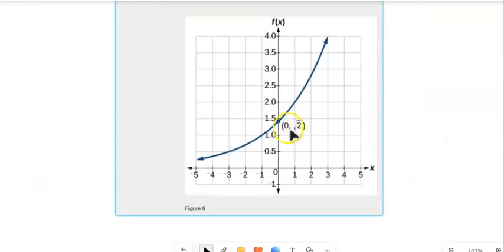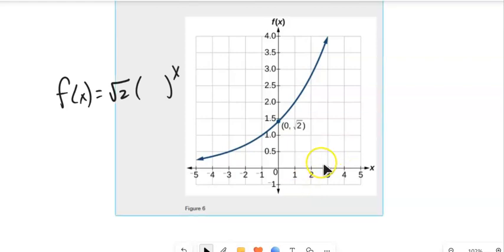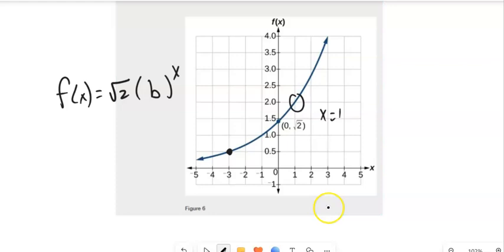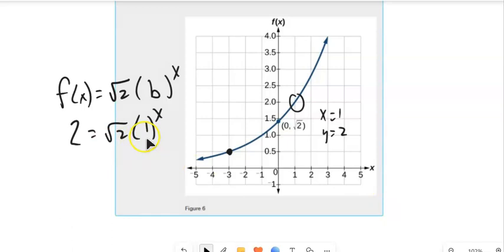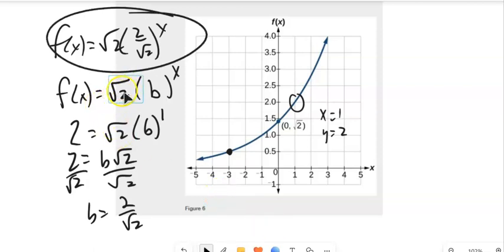I'm going to write an equation for this one going through the point (0, square root of 2). So f(x), my y-intercept is root 2. I've got to see how it's going. I could pick a point and see if I can get it to work. This goes through the point x is 1 when y is 2. So the output is 2 when the input is 1. When x is 1, b to the first power is just b. So I have 2 equals b times the square root of 2. Divide both sides by root 2. So b equals 2 over root 2. My equation would be f(x) equals the square root of 2 times (2 over the square root of 2) to the x.